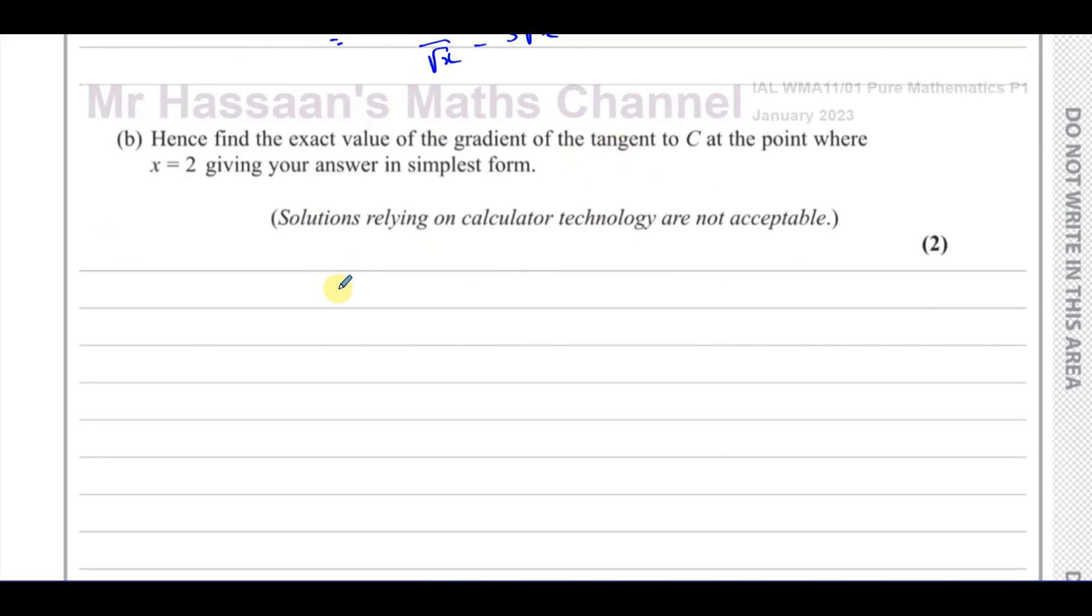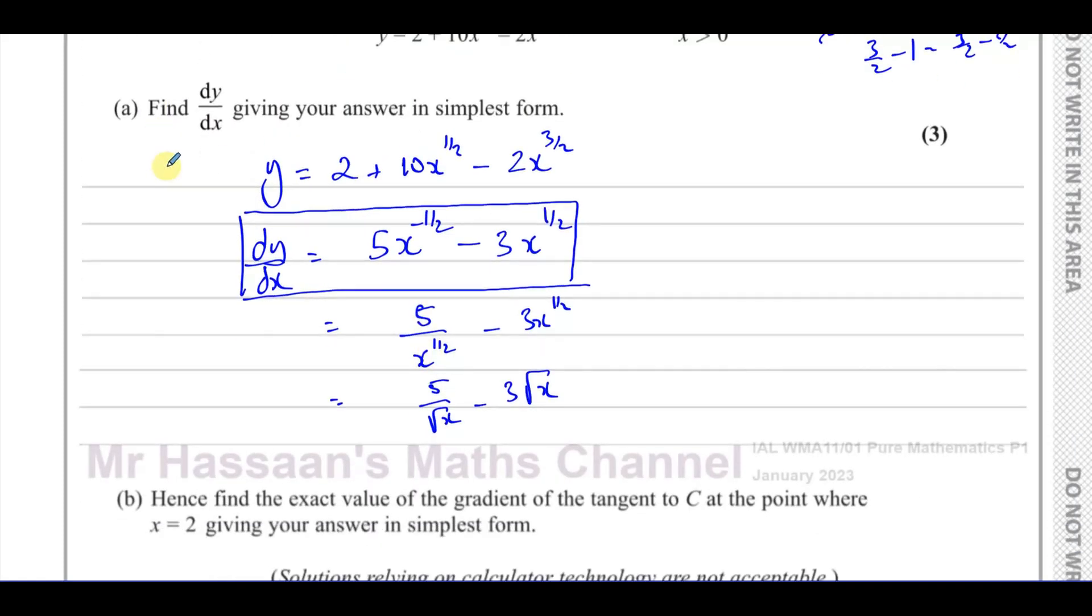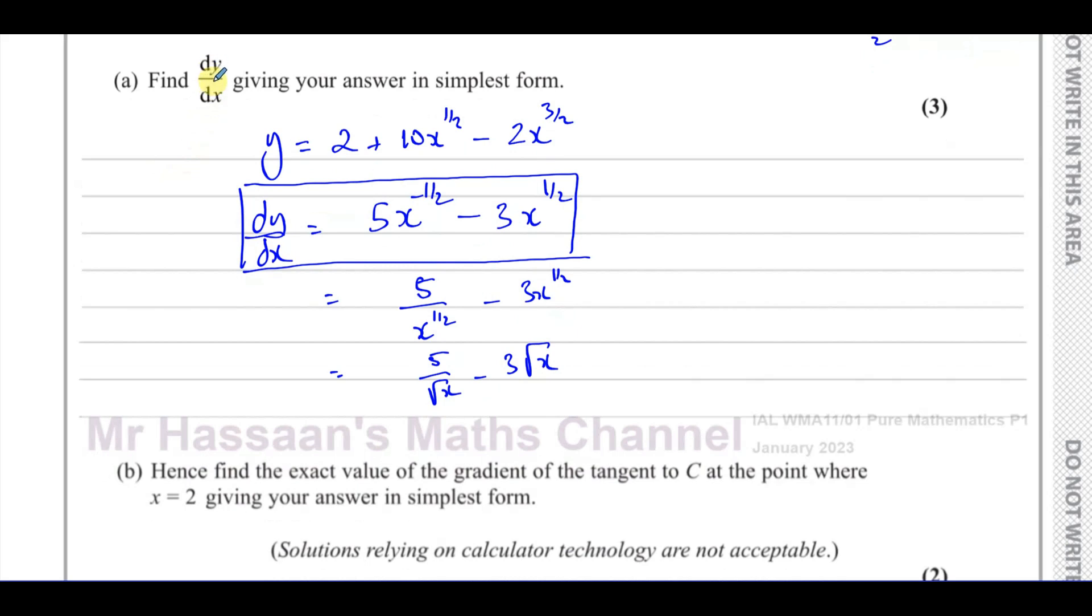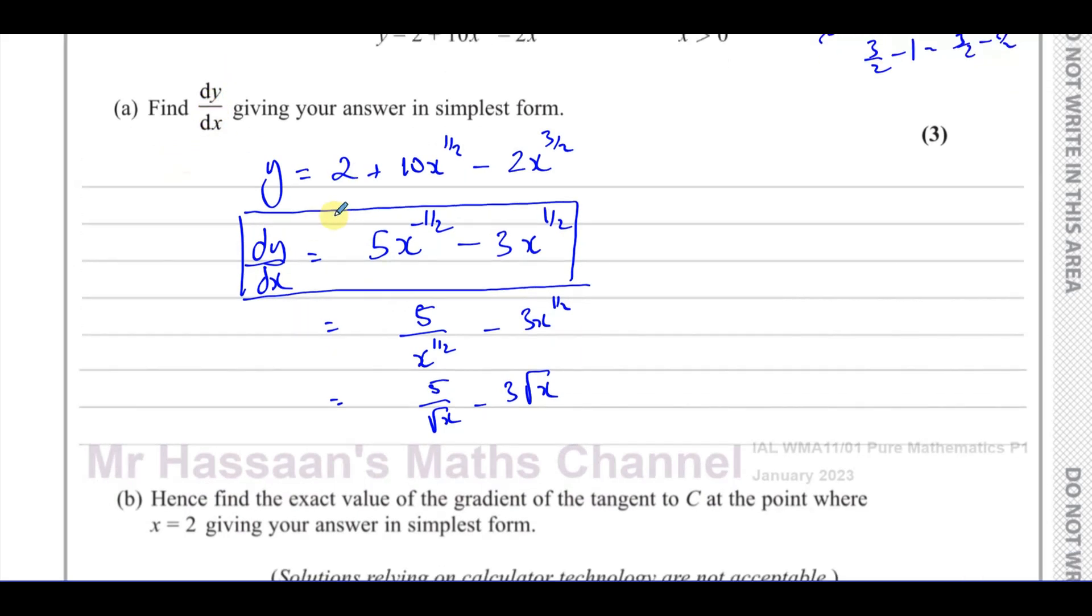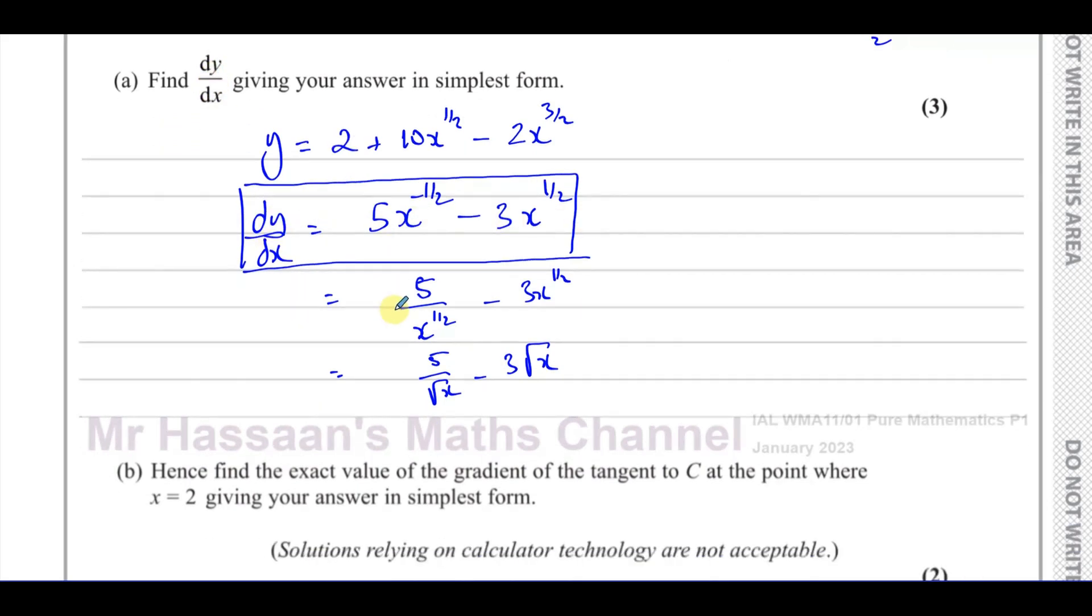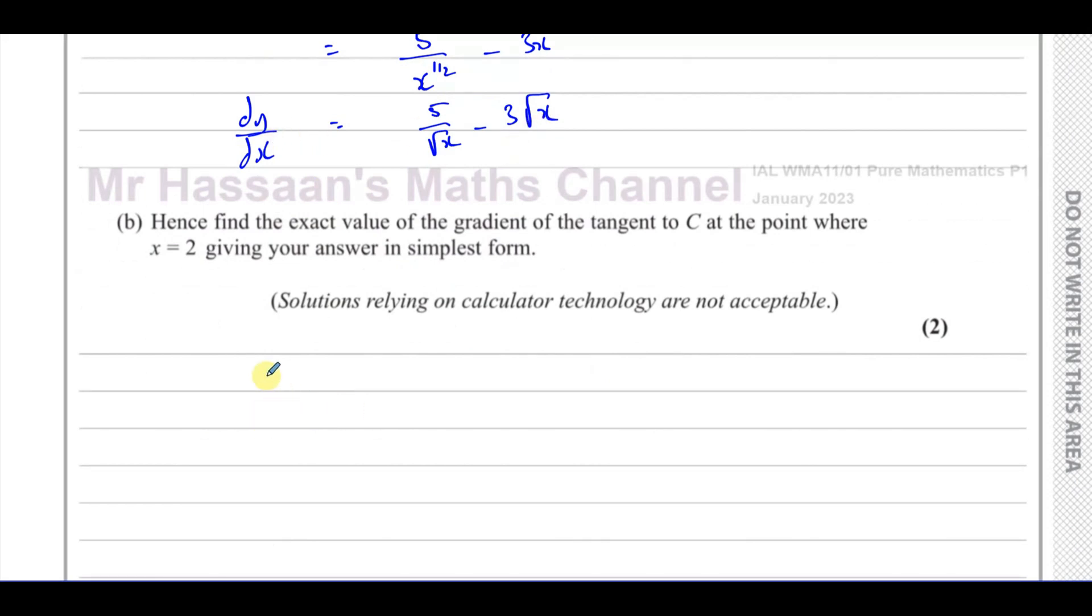So we need to find, we need to know what the gradient function is. And that's exactly what we found in part A. dy/dx tells you the gradient of a function. So this expression here, which we've written in its more suitable form for differentiation, for substituting values in over here. We can use that form here to help us substitute. We know that the gradient function is dy/dx.